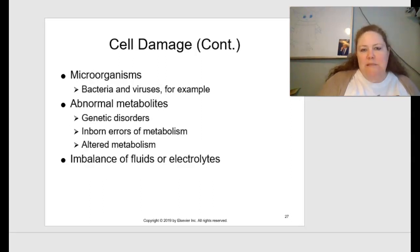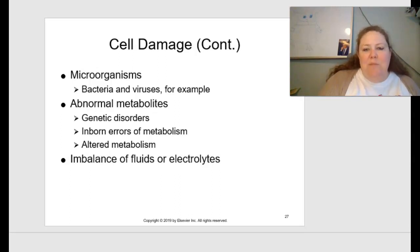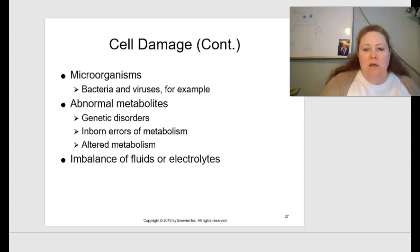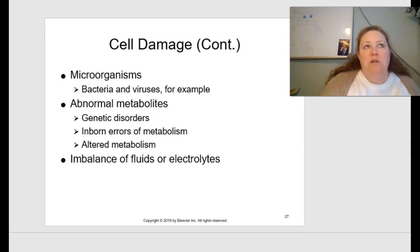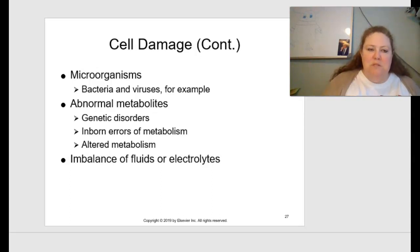Microorganisms like bacteria and viruses can also cause cell damage. Abnormal metabolites can result from genetic disorders, inborn errors of metabolism, or altered metabolism in the body. Finally, an imbalance of fluids or electrolytes can cause cell damage — think of elephantiasis, where large weeping sores develop on legs and extremities because fluids are leaking out.